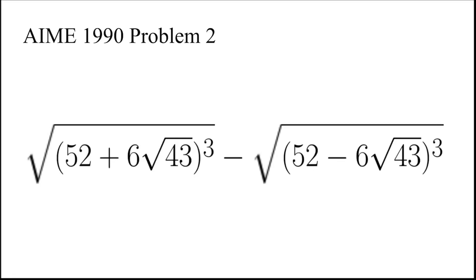In this video, we are going to evaluate the square root of 52 plus 6 times root 43 all cubed minus the square root of 52 minus 6 square root 43 all cubed. This is a problem from AIME 1990.